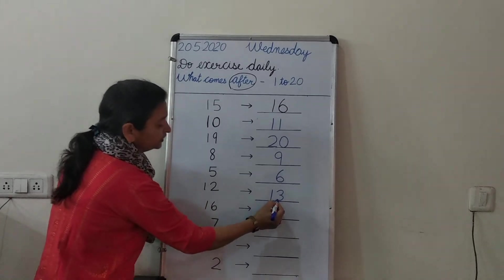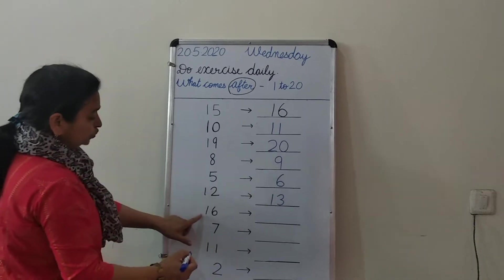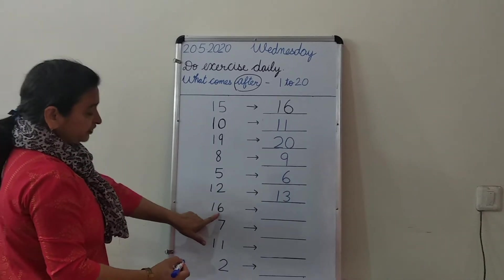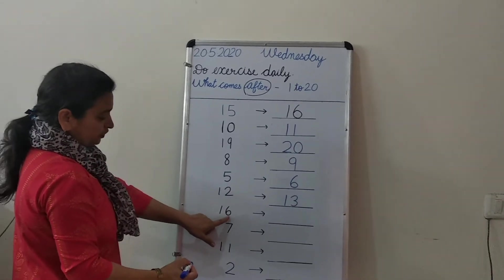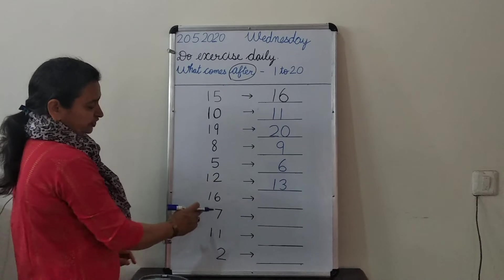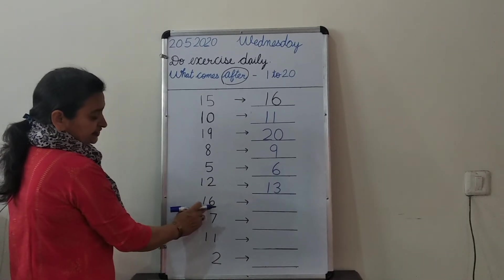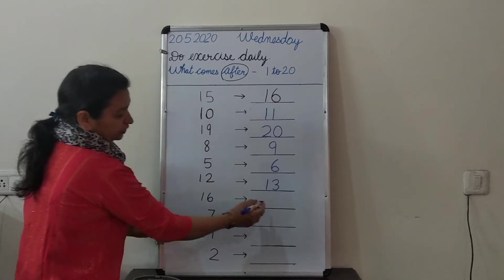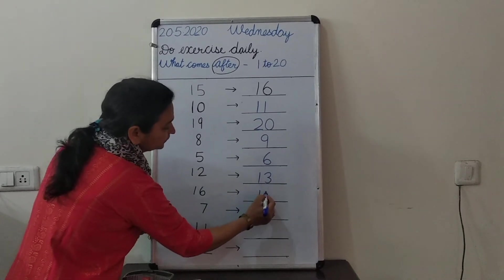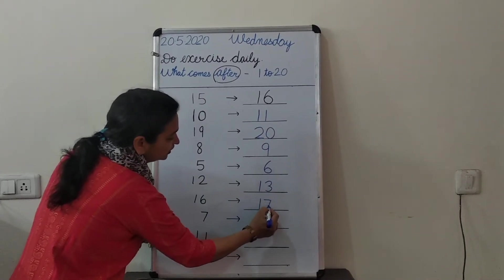Parents, please help the children to read the numbers. They will read by their own and then speak out the after number. 16 — what comes after 16? 17.